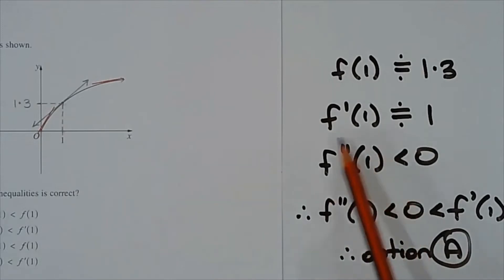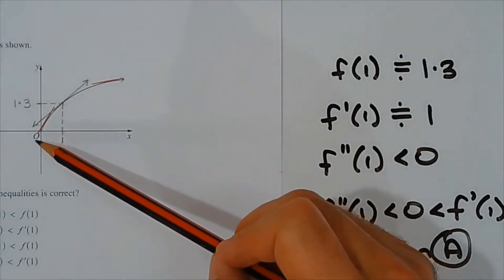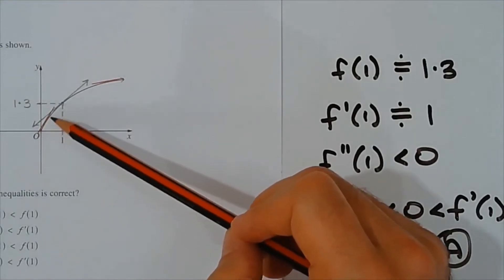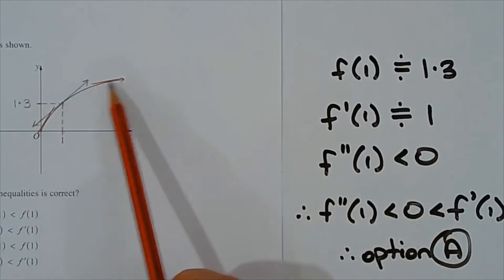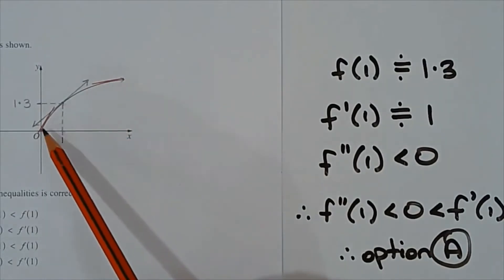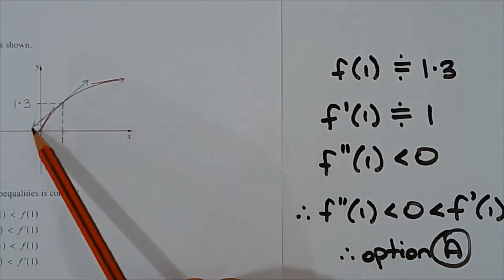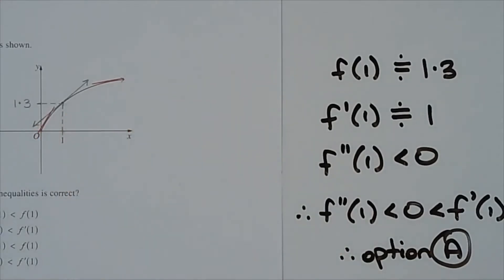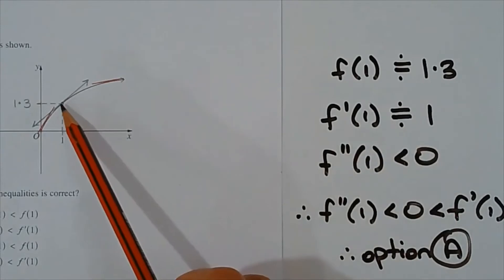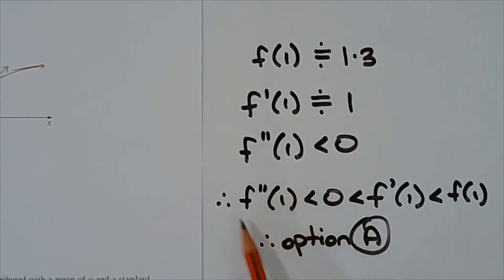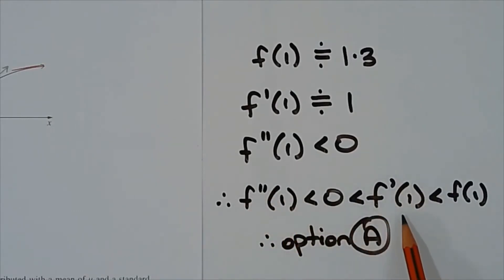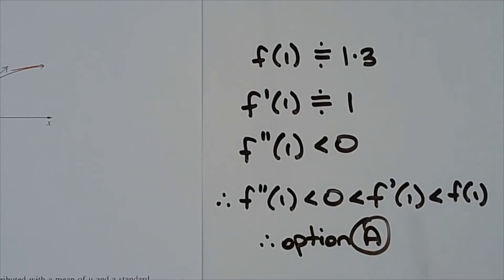The value of the second derivative at this point was found by analyzing the gradient of the tangent at points to the left and right of x equals 1. The gradient of the tangent decreased as we moved from left to right, so the second derivative at this point must be negative. Therefore, the second derivative at x equals 1 is less than 0, which is less than f'(1), which is less than f(1). The answer is option A.